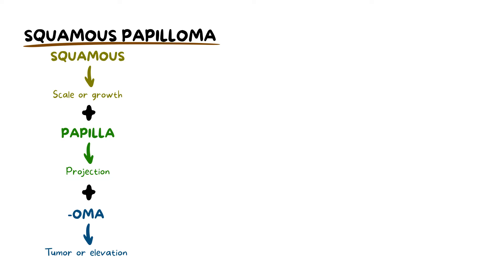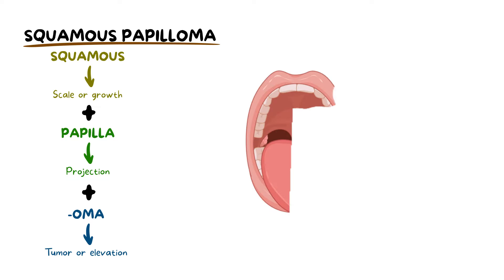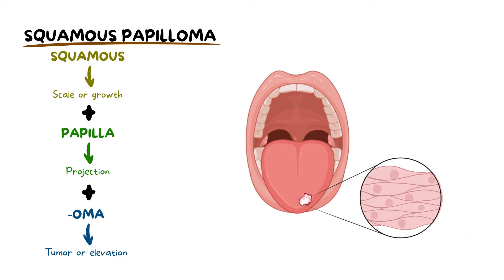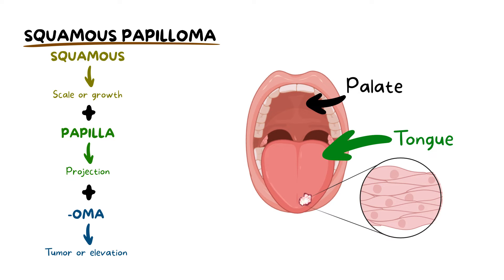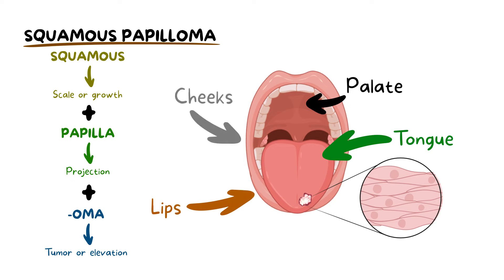Think of it as a skin tag for your mouth, a small bump that often resembles a cauliflower. These lesions are usually raised and painless, predominantly appearing on the tongue, palate, or inner side of the lips and cheeks.